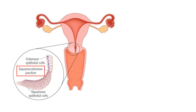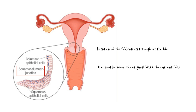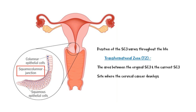The position of the squamocolumnar junction varies throughout life. The area between the original squamocolumnar junction and the current squamocolumnar junction is called the transformational zone, and this is the site where cervical cancer develops.